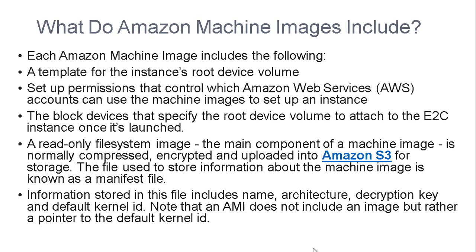What do Amazon Machine Images include? Each Amazon Machine Image includes a template for the instance's root device volume, and set up permissions that control which Amazon Web Services accounts can use the machine image to set up instances. It also includes block devices that specify the root device's volume to attach to the EC2 instance once it launches.